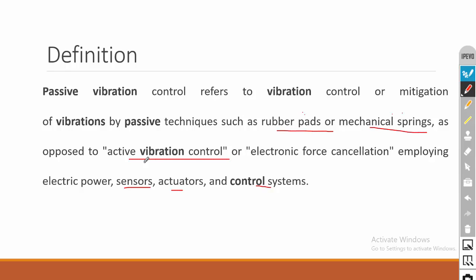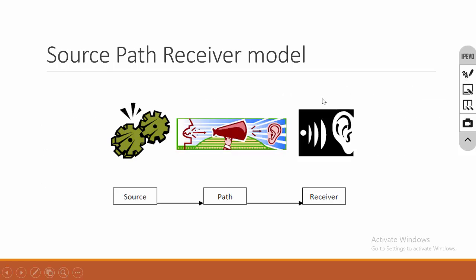In active control it is very effective since the sensor senses the input force and the system automatically adjusts based on the requirement. In passive control the system will not adjust based on the requirement — the system is constant. In simple words, the stiffness of the spring is constant in passive vibration control, whereas in active vibration control the stiffness of the spring will be varying. That is the difference between active and passive vibration control.